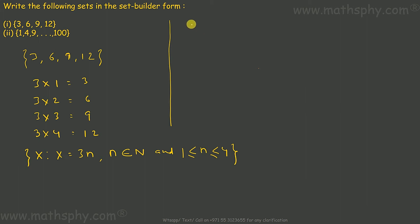1 can be written as 1 square gives you 1, 4 can be written as 2 square gives you 4, 9 can be 3 square gives you 9, then we have 4 square gives you 16. Likewise you keep going till 10. 10 square gives you 100.